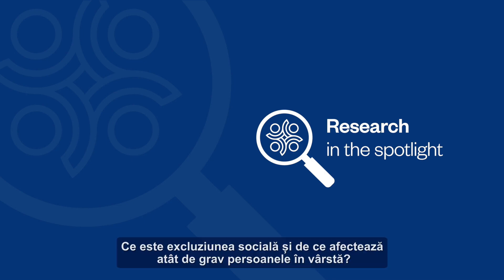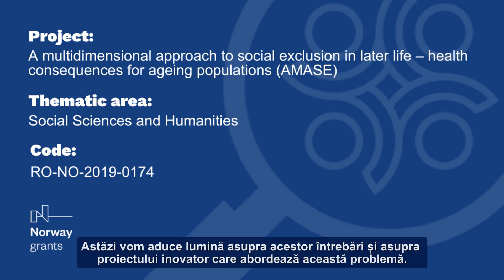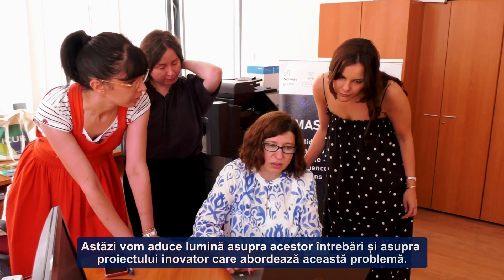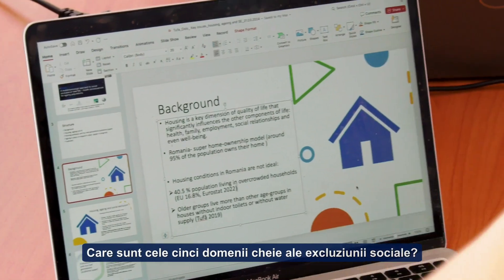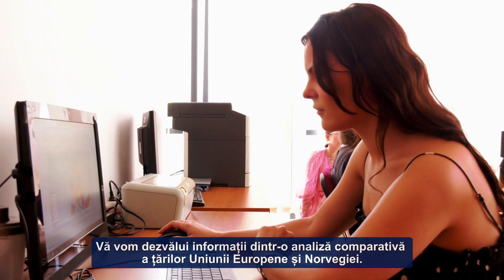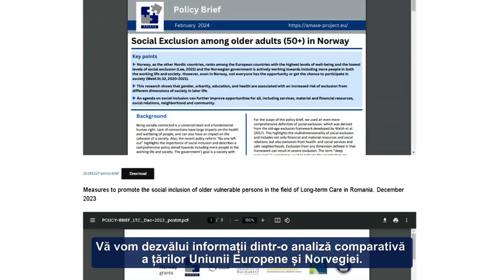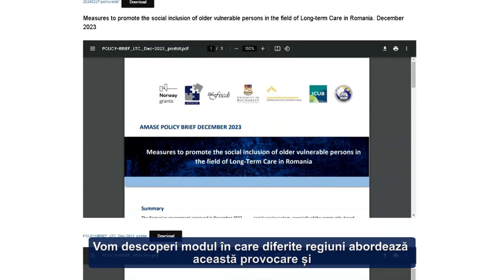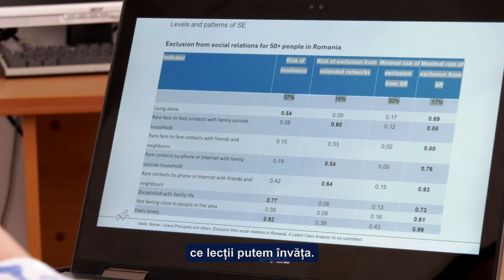What is social exclusion and why does it impact older adults so severely? Today we will shed light on these questions and their groundbreaking project tackling this issue. What are the five key domains of social exclusion? We will reveal insights from a comparative analysis of EU countries and Norway. Discover how different regions address this challenge and the lessons we can learn.